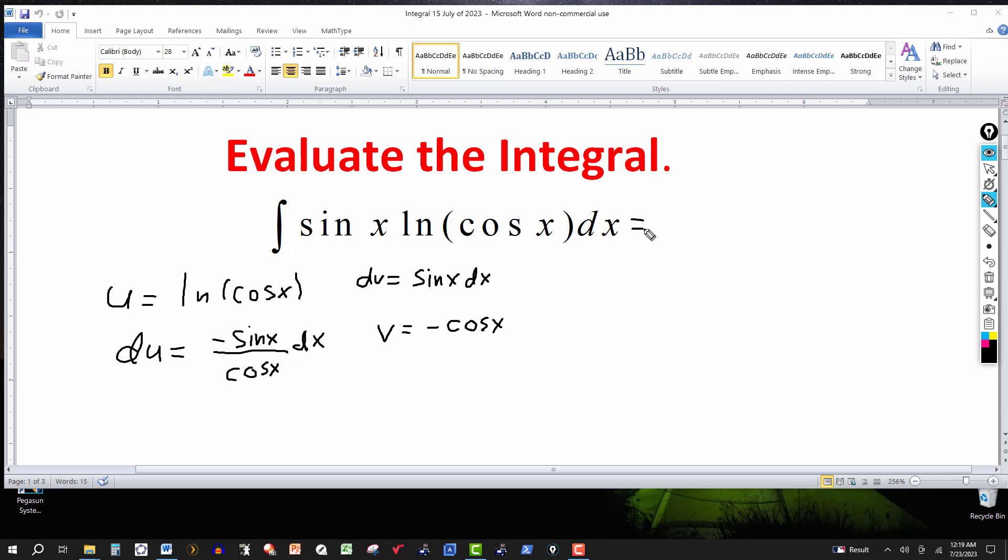So using the standard formula, it's going to be u times v as the first part of the answer. So u times v—I'll put the minus cosine first—so minus cosine of x and then ln of cosine of x.